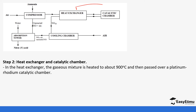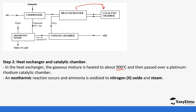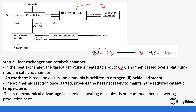In the heat exchanger and catalytic chamber — which are sometimes shown together — the mixture is heated to about 900°C, different from the 450°C used in the Haber process, and then passed over the platinum-rhodium catalyst. In the catalytic chamber, ammonia is oxidized to nitrogen monoxide (NO) and steam is given off: ammonia reacts with oxygen to form nitrogen monoxide, water, and heat.